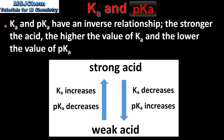Ka and pKa have an inverse relationship. The stronger the acid, the higher the value of Ka and the lower the value of pKa. So as we go from a weak acid to a strong acid, the value of Ka increases and the value of pKa decreases. And as we go from a strong acid to a weak acid, the value of Ka decreases and the pKa increases.